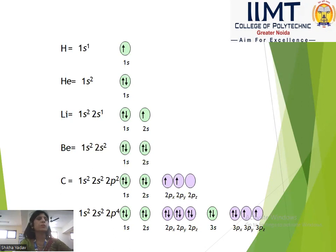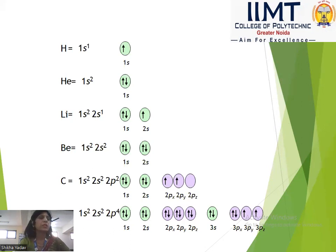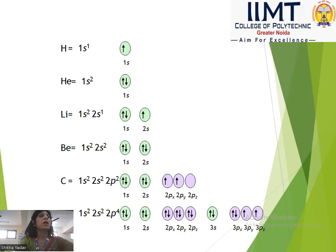Next, we come to Hund's Rule. Hund's Rule states that electron pairing will not take place until each orbital of the same energy is first singly filled with parallel spins. This is Hund's Principle. So we have seen three principles: Aufbau, Pauli, and Hund's.